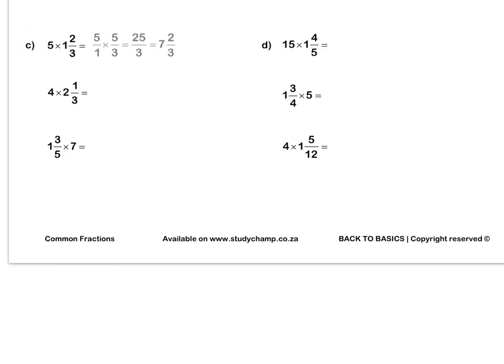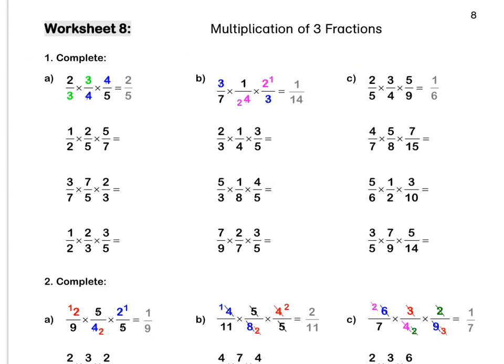When you are done, use the memo to mark your answers. Worksheet 8: multiplication of 3 fractions. In this sum, we simplify by dividing our 3 and our 3 to get 1 and 1. We divide our 4 and our 4 to get 1 and 1. Then we multiply out to get two fifths.